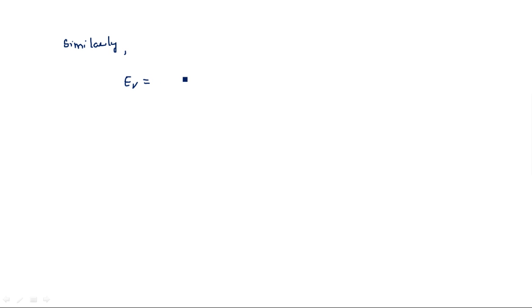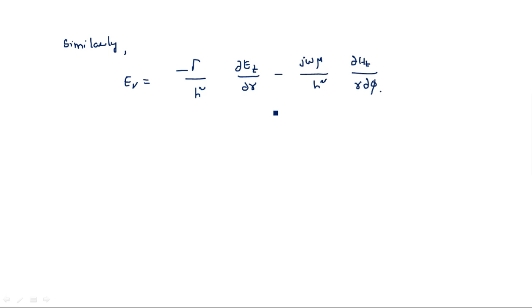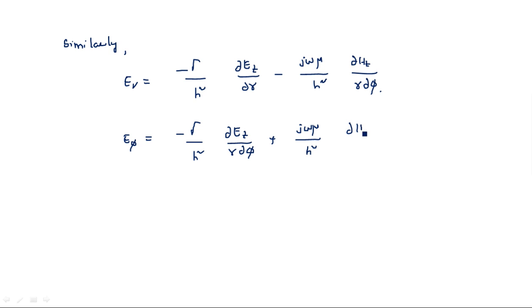Similarly, the electric field components: Er is equal to minus (γ/h²)(∂Ez/∂r) minus (jωμ/h²)(∂Hz/r∂φ). And Eφ is equal to minus (γ/h²)(∂Ez/r∂φ) plus (jωμ/h²)(∂Hz/∂r).